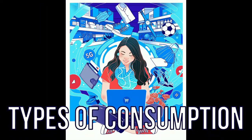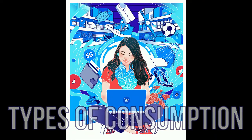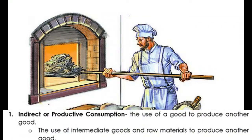Types of consumption. The first is indirect or productive consumption. It is the use of a good to create or produce another good — the use of intermediate goods or raw materials in order to produce a product.